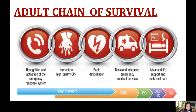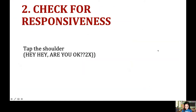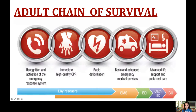For the adult chain of survival, the sequence is: recognize and activate the emergency response, provide immediate high-quality CPR, perform rapid defibrillation, then basic and advanced emergency medical services, and finally advanced life support, which is usually done by ICU staff.